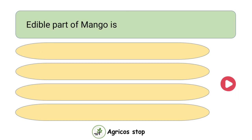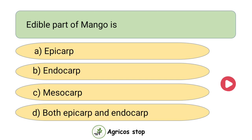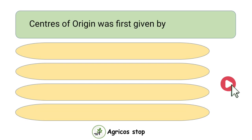Edible part of mango is? Options are Epicarp, Endocarp, Mesocarp, and both Epicarp and Endocarp. The answer is Mesocarp. Mesocarp is the edible part of mango.